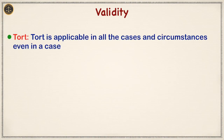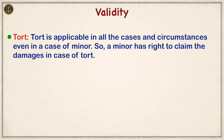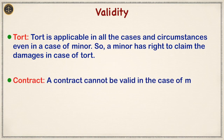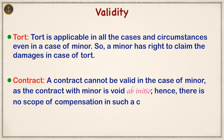Last but not the least, validity. Tort is applicable in all cases and circumstances, even in the case of a minor. So a minor has the right to claim damages in case of tort. On the other hand, a contract cannot be valid in the case of a minor, as a contract with a minor is void. Hence, there is no scope of compensation in such a case.